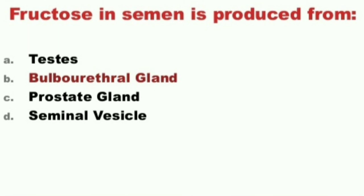Next question: Fructose in semen is produced from: A) Testis, B) Bulbourethral gland, C) Prostate gland, D) Seminal vesicle. The answer is D) Seminal vesicle. Fructose in semen is produced from the seminal vesicle.